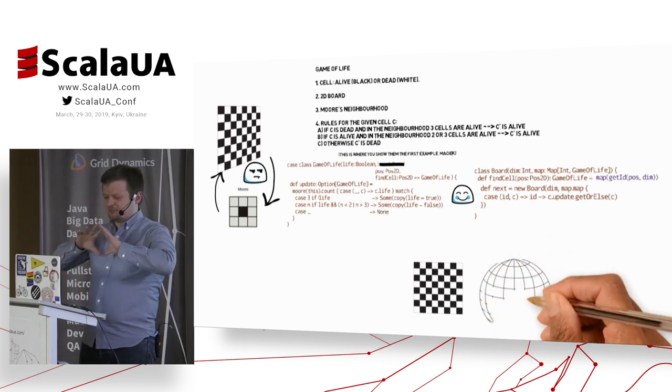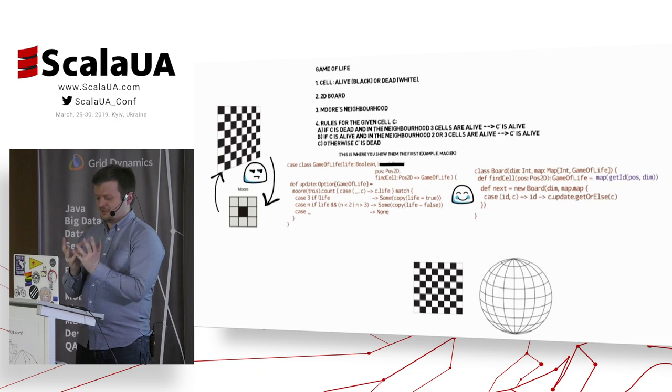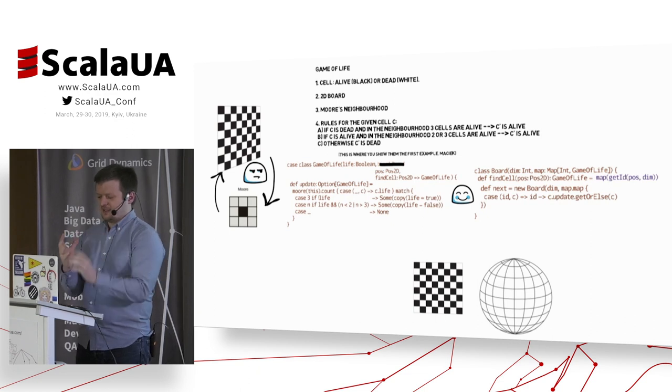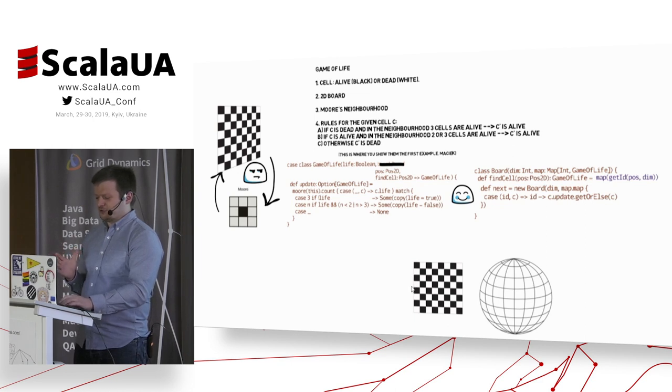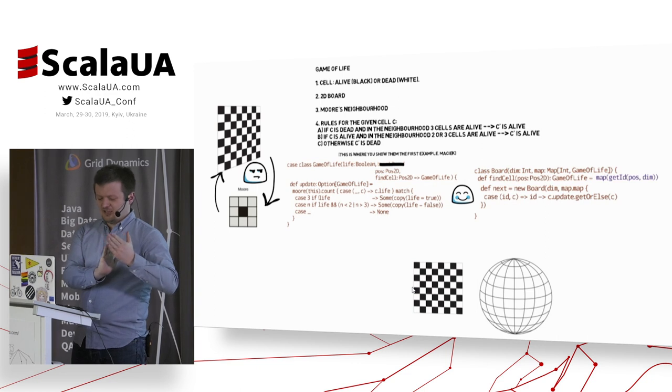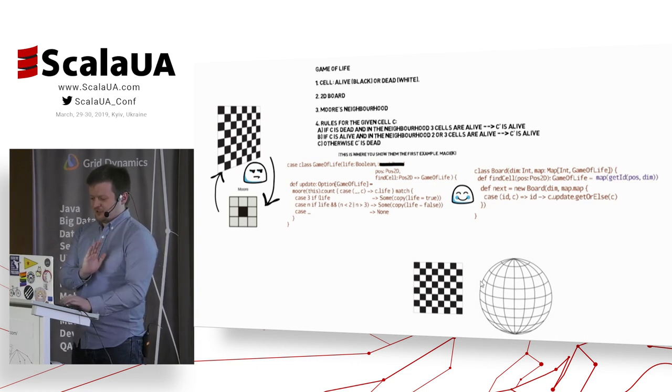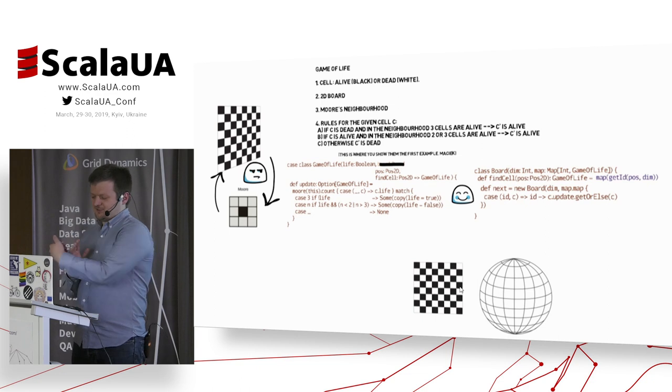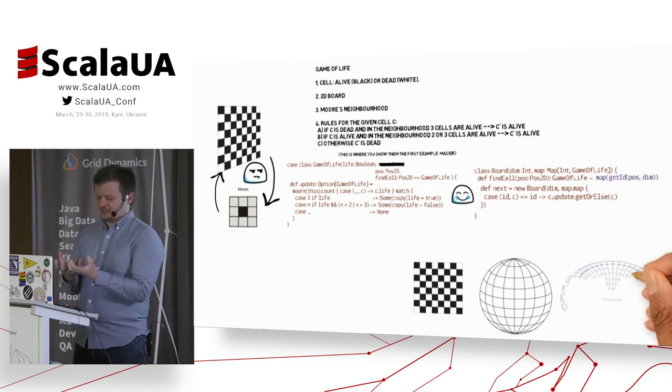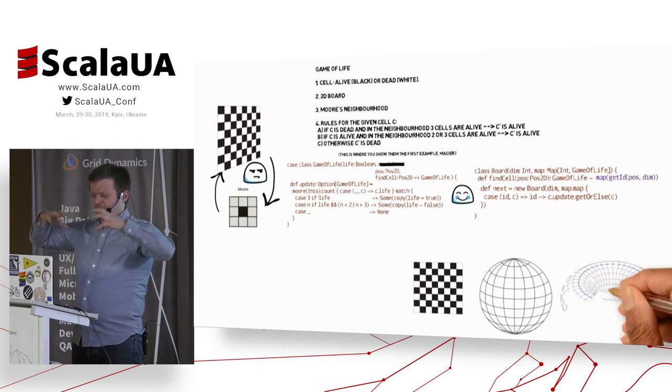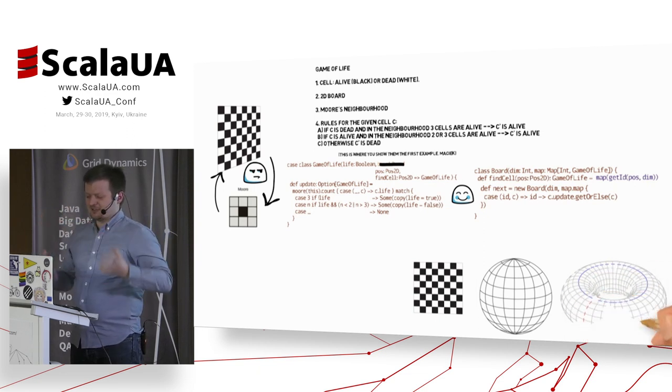Like you can remember from the planet, we can wrap the board around. And that's why when we are on the edge and try to get a neighbor which is even more to the left, then we go around and we get the cell which is the most to the right and vice versa. Well, that's still a problem here on the poles. So we can do it again. We can wrap the whole board inside out.